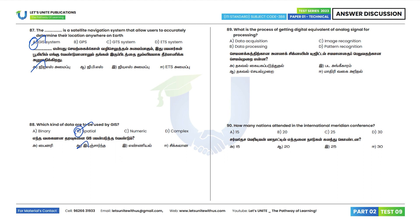Question 89: What is the process of getting a digital equivalent of an analog signal for processing? The answer is data digitization. Option E. Question 90: How many nations attended the International Meridian Conference?